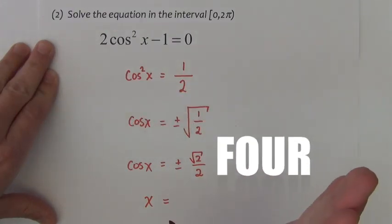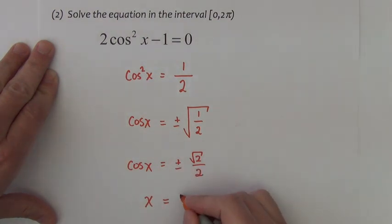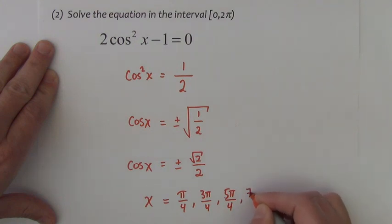They're at all the 45's in each quadrant. So we're going to be at π over 4, 3π over 4, 5π over 4, and 7π over 4.